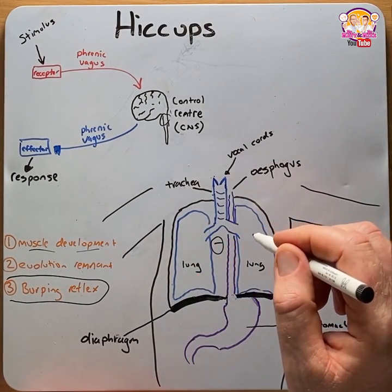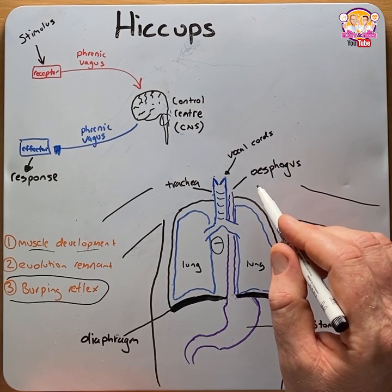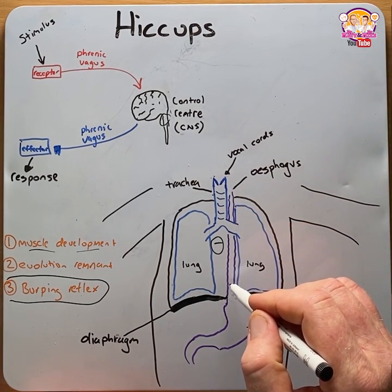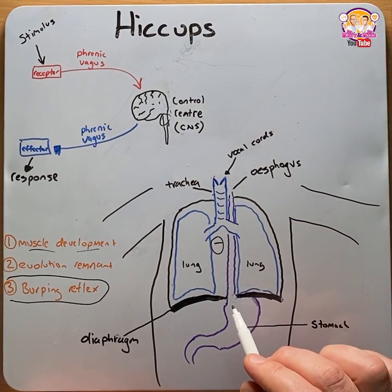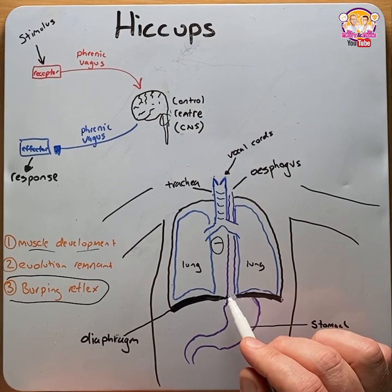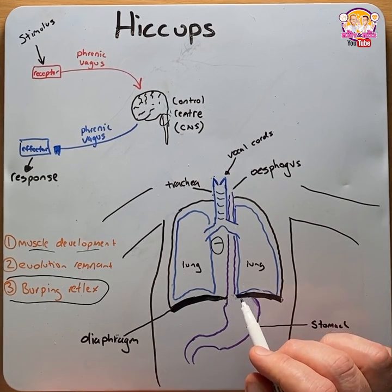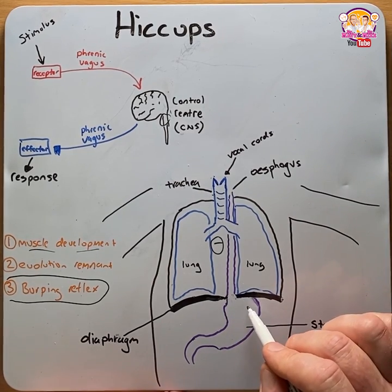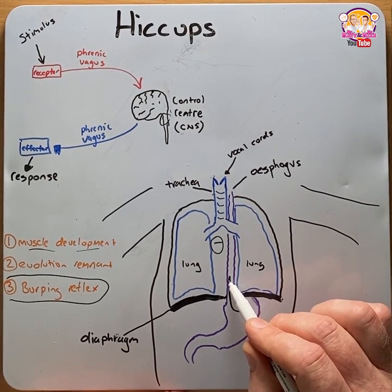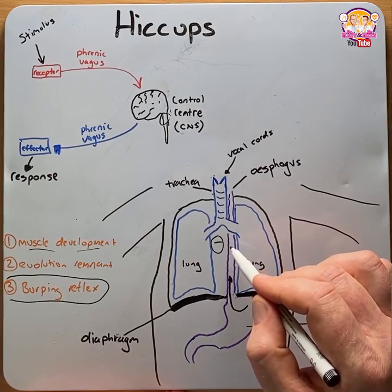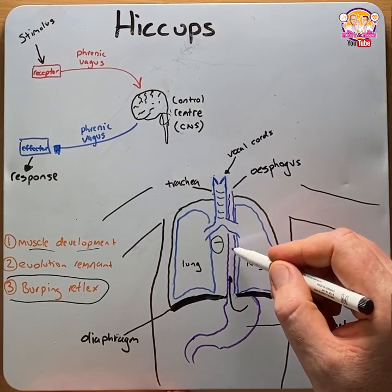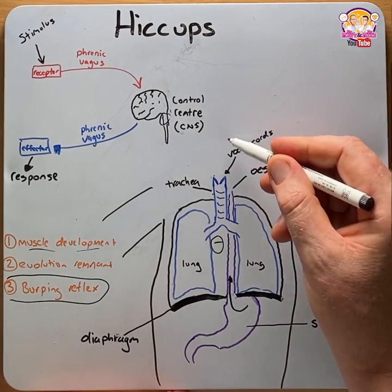At the same time, the vagus nerve inhibits peristalsis in the esophagus and relaxes the lower esophageal sphincter, which then draws air out of the stomach into the mid-esophageal region, allowing the air to be burped out.